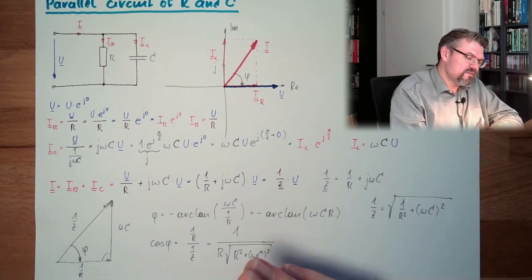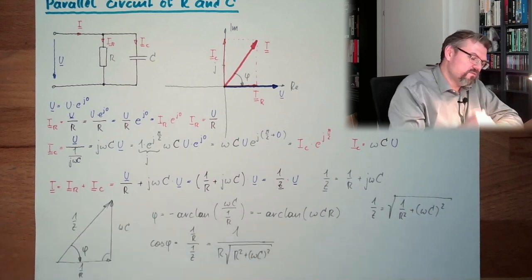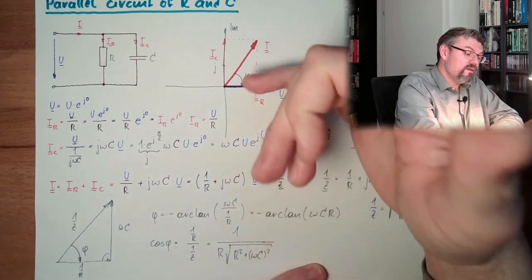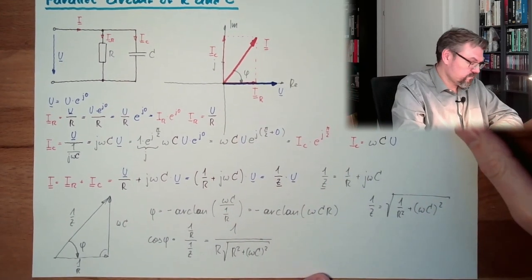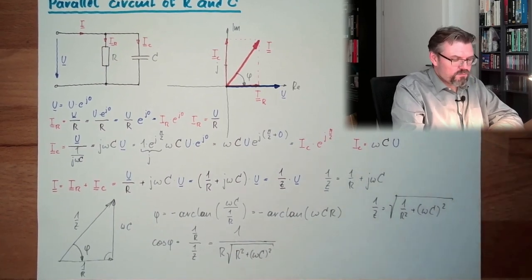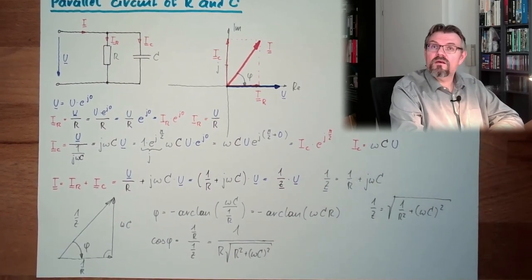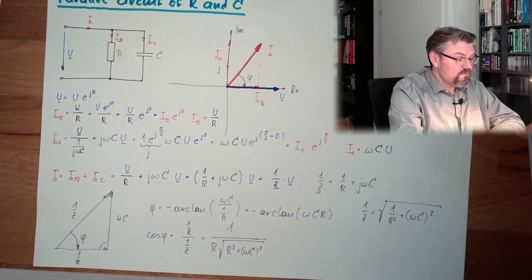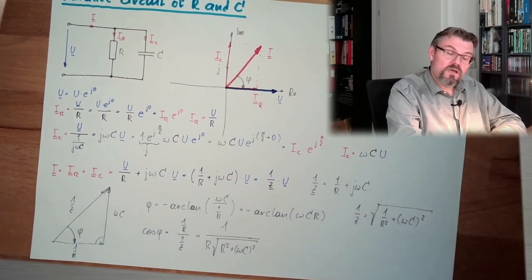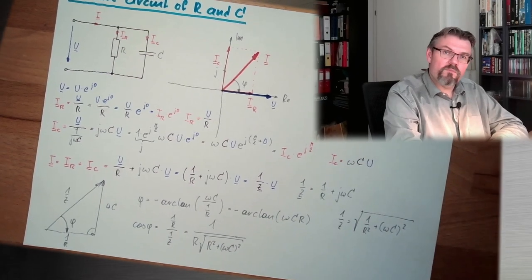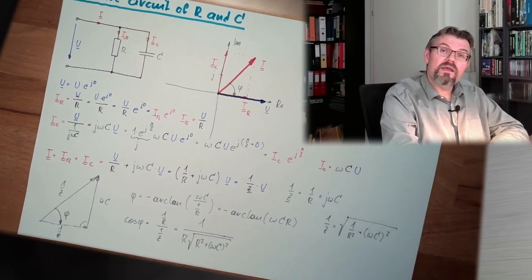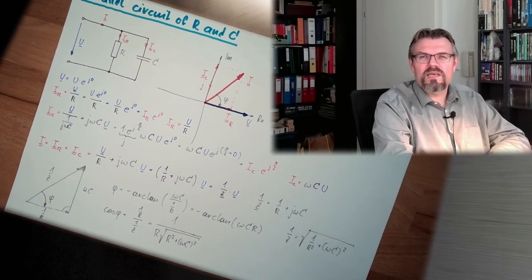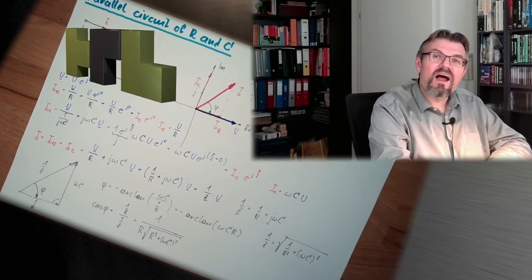So thinking about the pointer diagram helps. Do not forget this. The absolute value of phi is just a sign. The absolute value of phi is easy to calculate. And if you are not sure about the sign, think about the pointer diagram. So every possible thing we can have in an AC circuit with R and C, parallel R and C, is now written down. So we had now parallel R and C and last time we had parallel R and L.